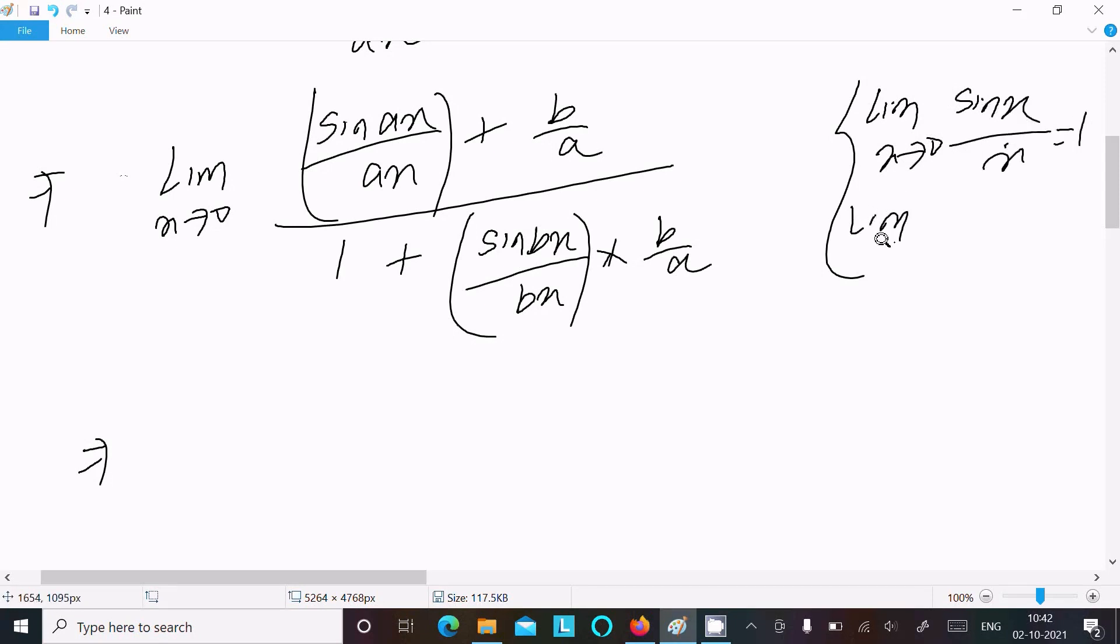Similarly, lim as x→0 of sin(ax)/ax also equals 1, because as x→0, ax→0 as well.